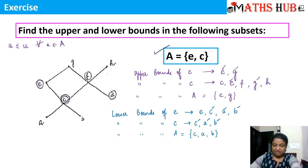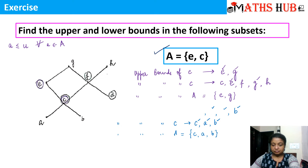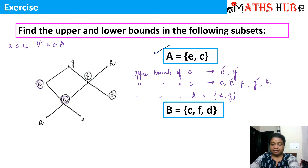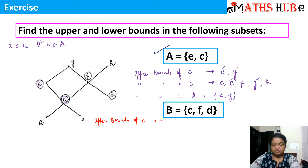I hope it is clear how to calculate the upper bounds and lower bounds. Whenever we talk about upper bounds or lower bounds, we are not concerned with the entire poset, but choosing a particular subset from it. The next subset is B, which contains the elements c, f, and d. Let us calculate the upper bounds of element c — we have already calculated these, so the upper bounds of c are {c, e, f, g, h}.